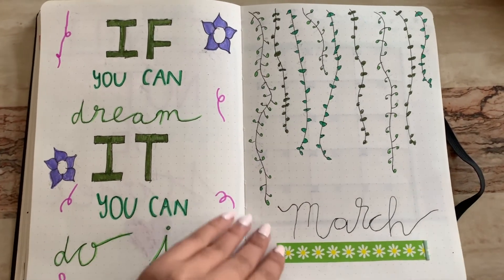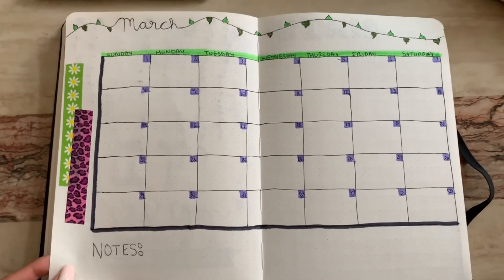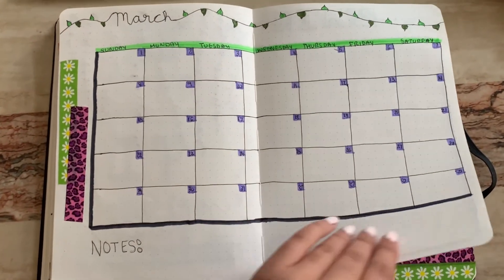And my camera did cut off again, but I did add my weekly and here is the whole monthly flip through.